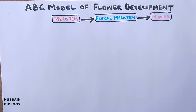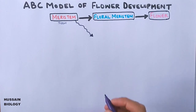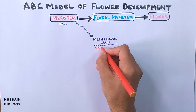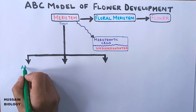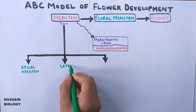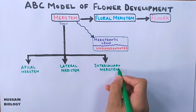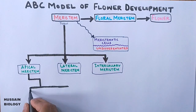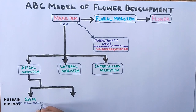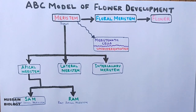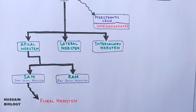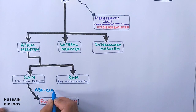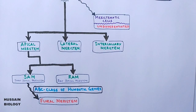Getting back to the meristem tissue — initially it consists of undifferentiated cells called meristematic cells. After differentiation, these develop into three types of meristems: apical meristem, lateral meristem, and intercalary meristem. The apical meristem further differentiates into SAM (shoot apical meristem) and RAM (root apical meristem). It is the shoot apical meristem from which floral meristem arises, and it is the ABC class of homeotic genes that kicks in and transforms the shoot apical meristem into floral meristem.